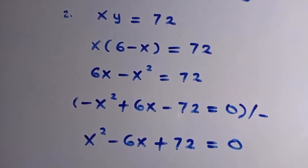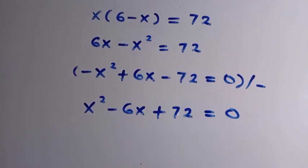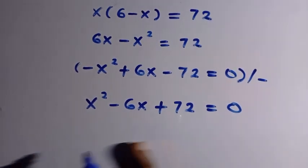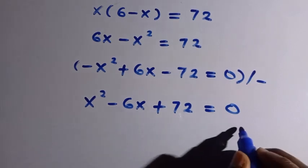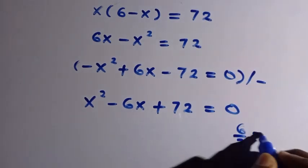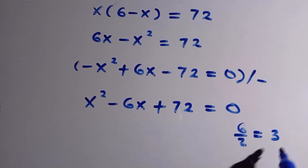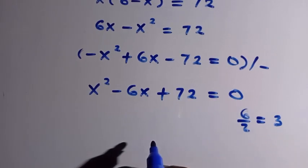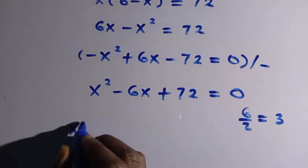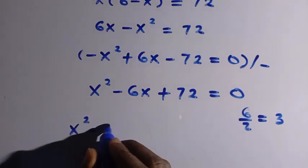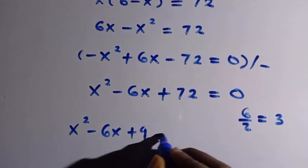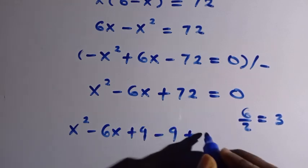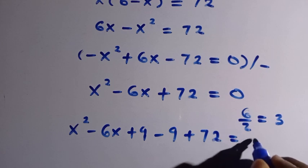Having this expression, we solve it by completing the square. We take the coefficient of x, which is 6, divide by 2 to get 3, then square it to get 9. We add 9 and subtract 9, giving us x squared minus 6x plus 9, then minus 9 plus 72 equals 0.